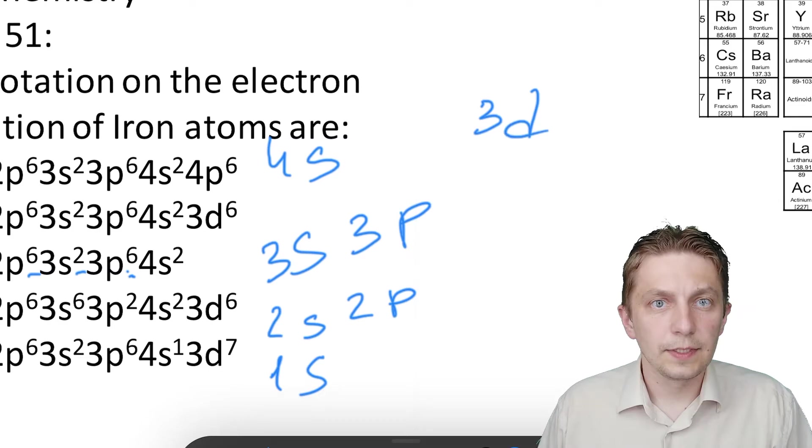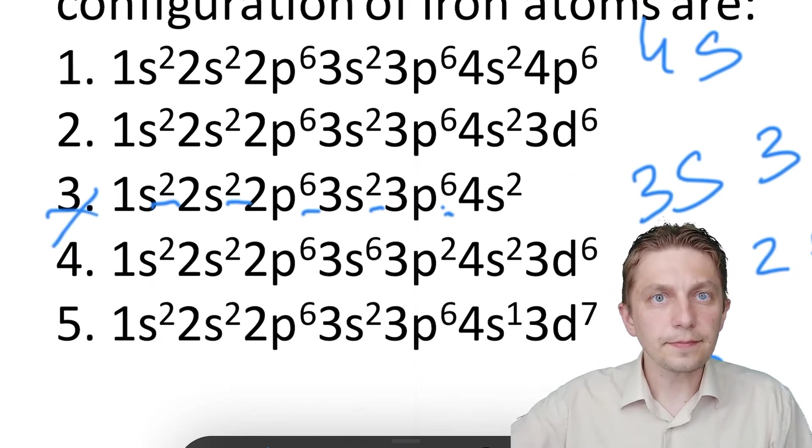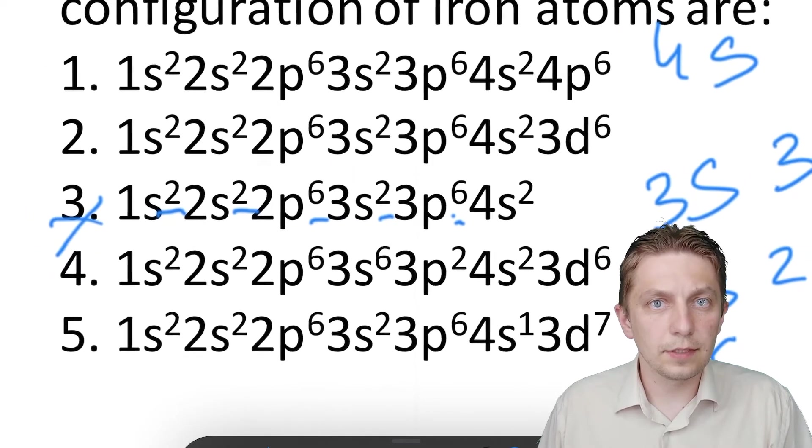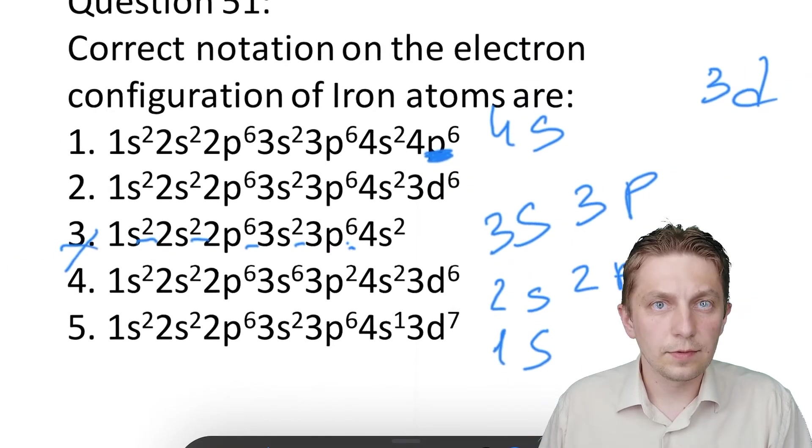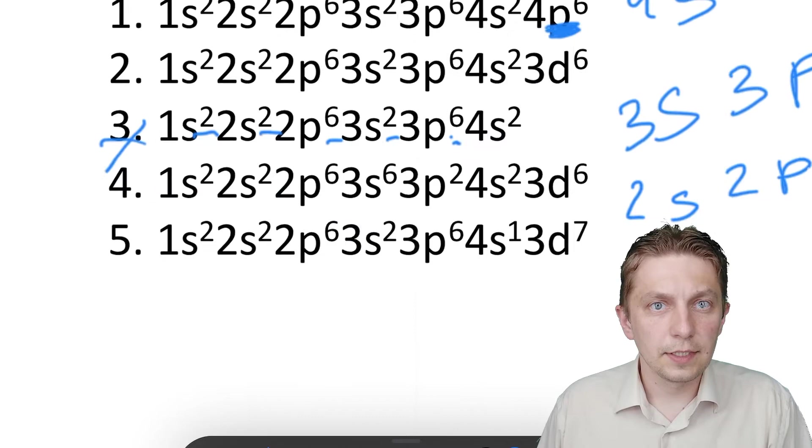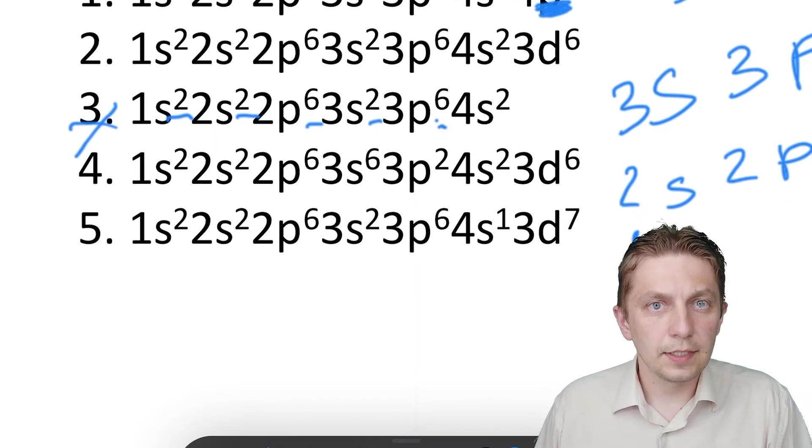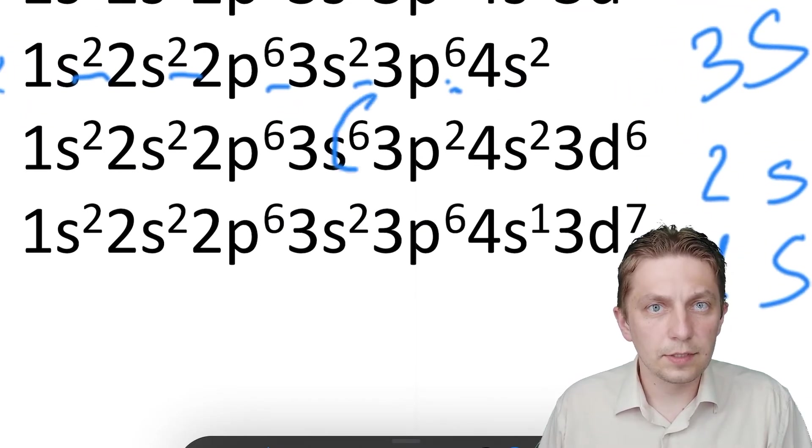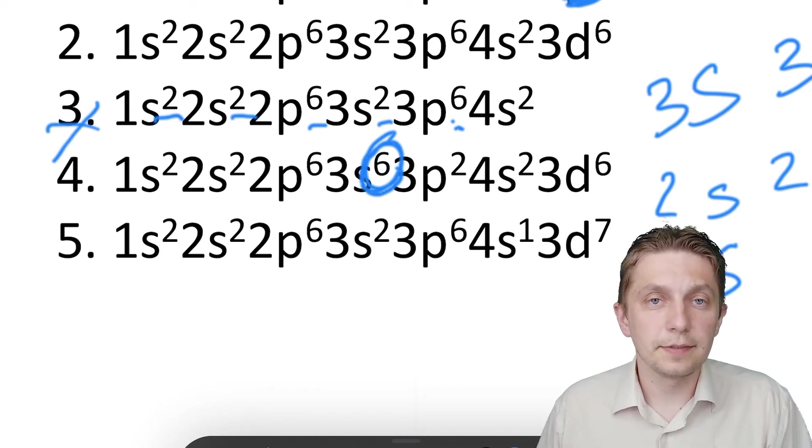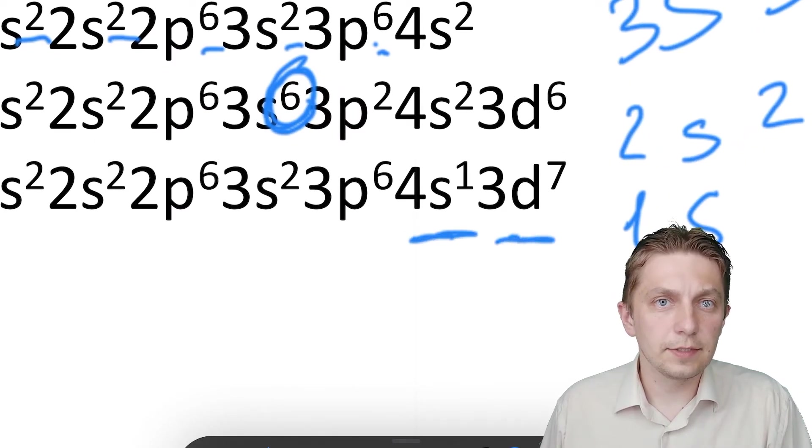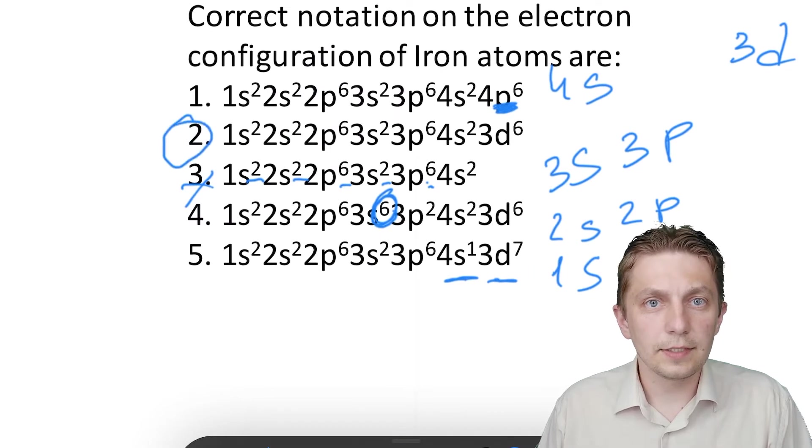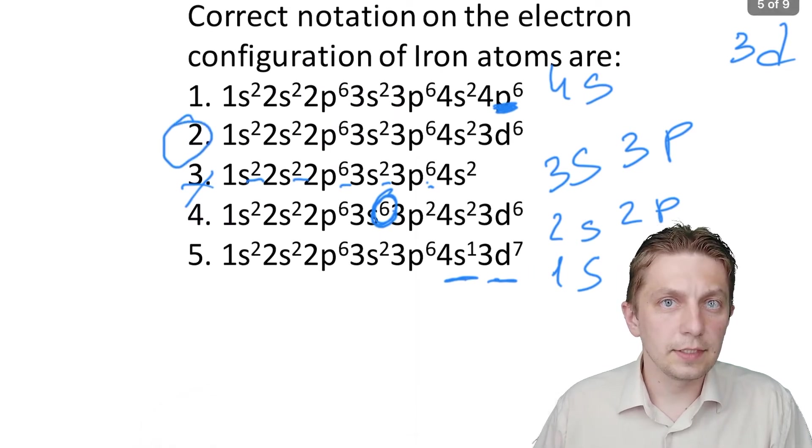So let's see what's wrong. It's wrong because of 4p6, and on s orbital can be six electrons and here it's wrong. So answer it's number two.